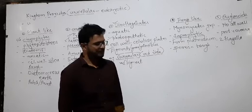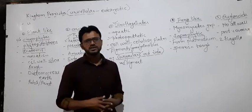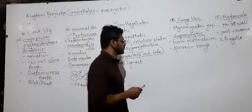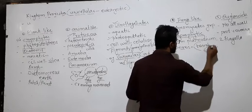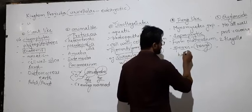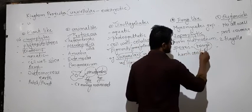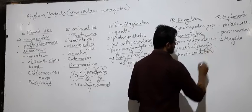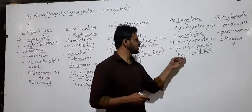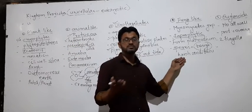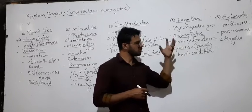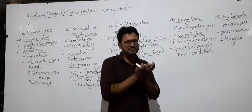They form spores for their reproduction, aur those spores are having a very tough layer. Tough spore hone ki vajah se, they can withstand harsh conditions - harsh conditions means unfavorable conditions like lack of food material, lack of water, increase in temperature. Aise conditions ko harsh conditions, unfavorable conditions, ya non-suitable conditions bolte hain. Toh yeh harsh conditions ko survive karta hai tough layer ki vajah se jo spores ke upar present hoti hai. Yeh hoga fungi-like Protista.